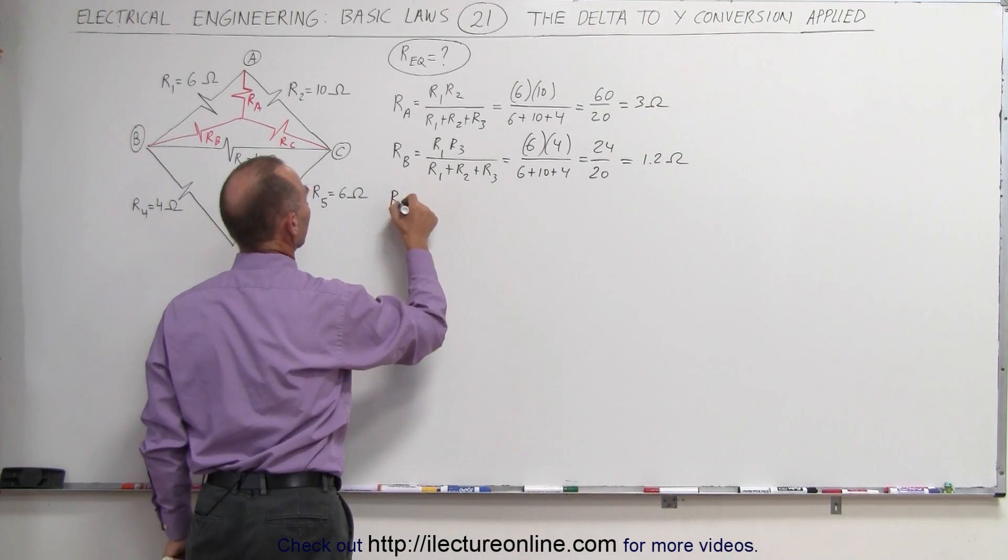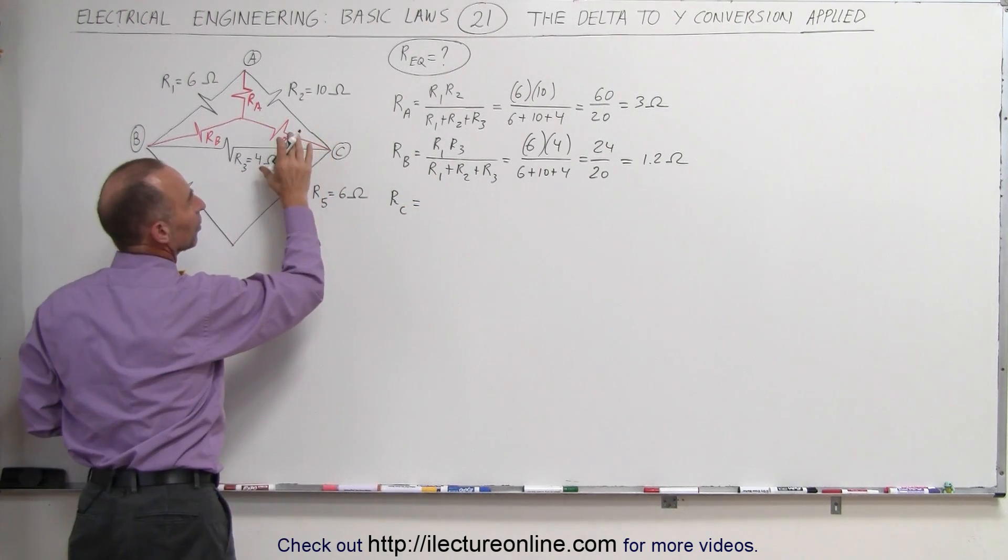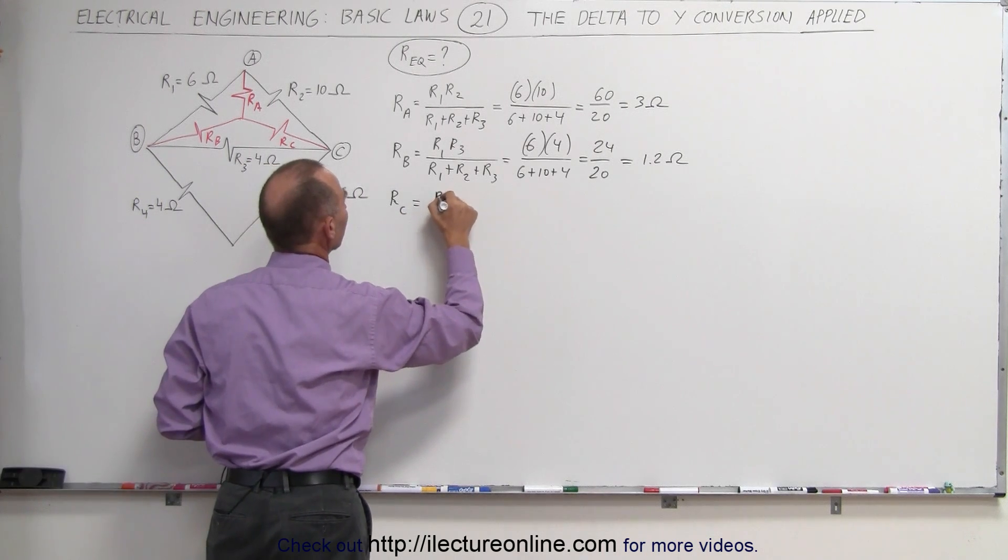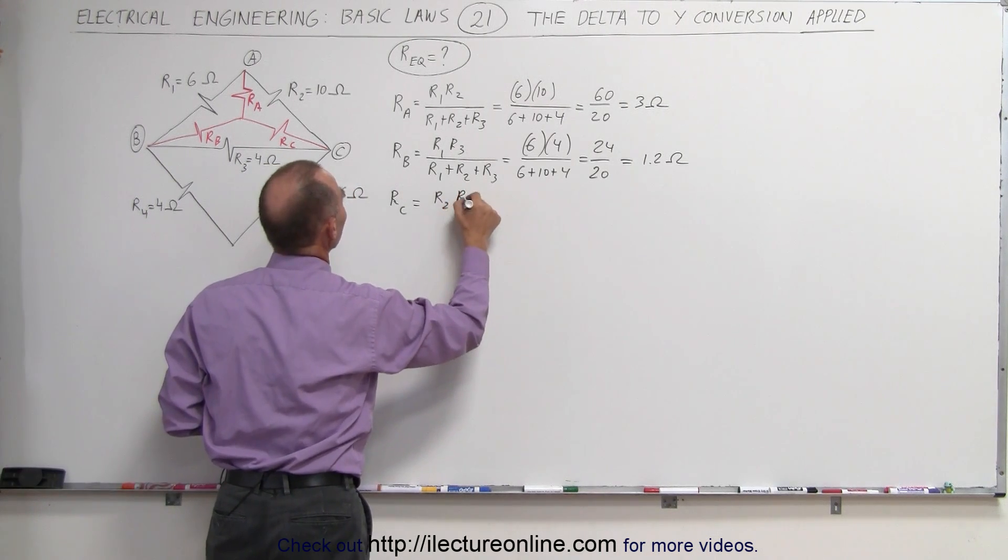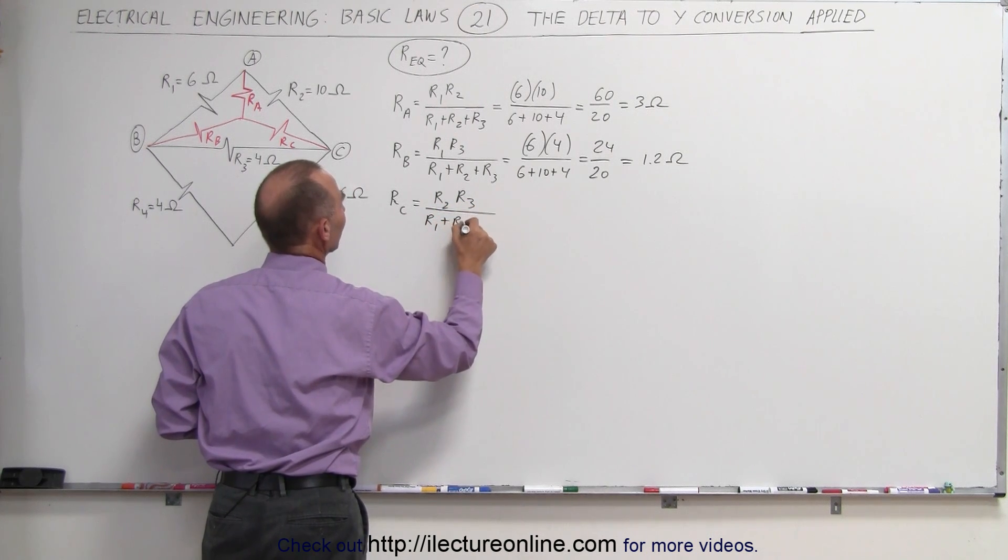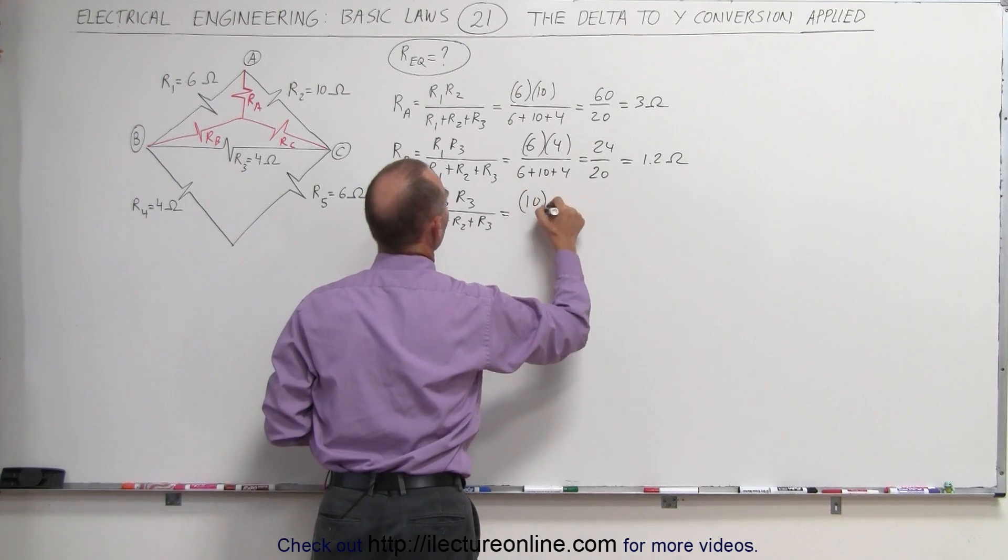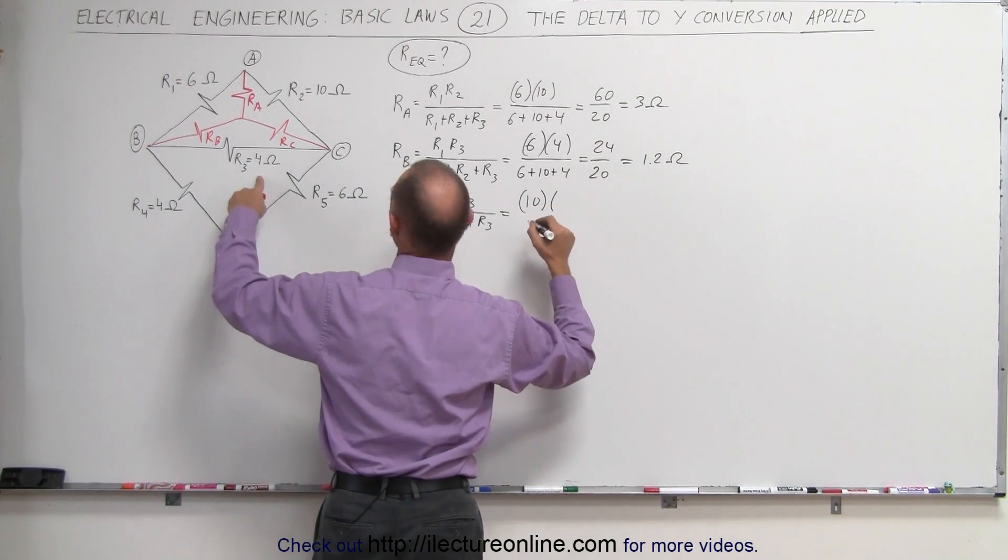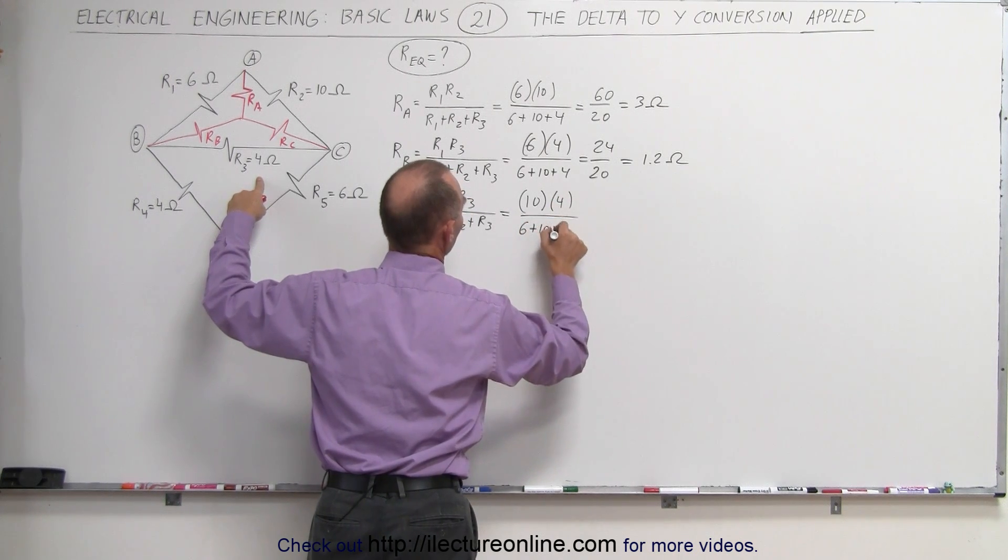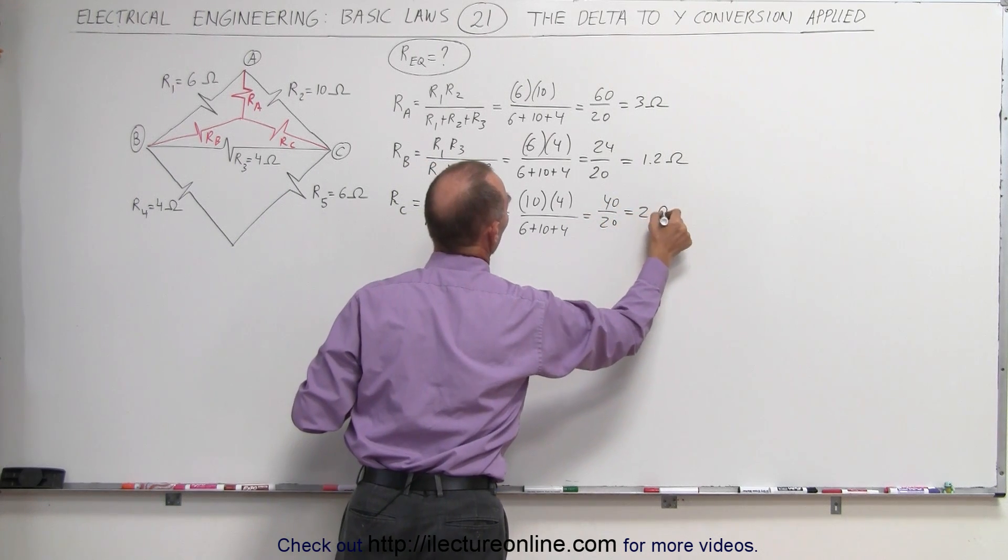And finally, the third resistor, R sub C is equal to, R sub C is between R2 and R3, so it's the product of those two resistors, R2 times R3 divided by R1 plus R2 plus R3. R2 is equal to 10, R3 is equal to 4. The sum, 6 plus 10 plus 4. This is 40 divided by 20, or 2 ohms.